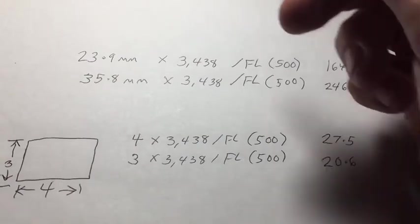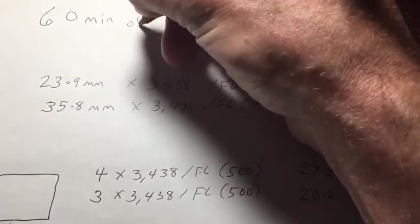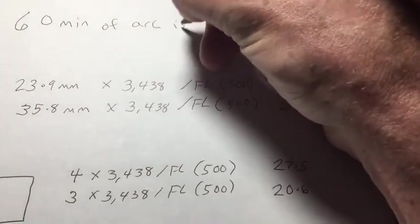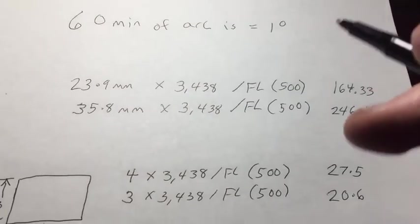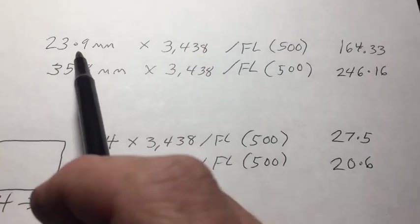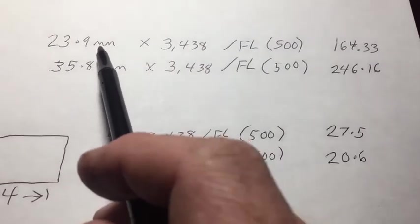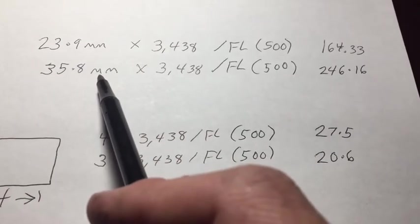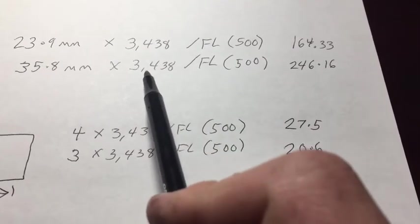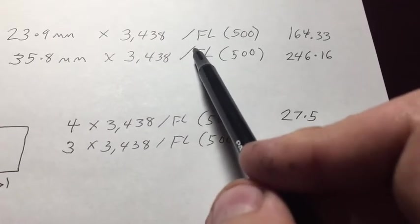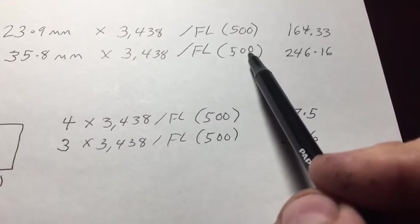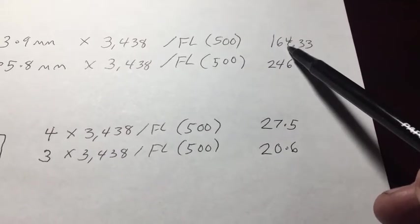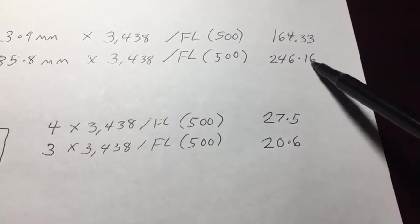This gets a little tricky, but just know that 60 minutes of arc is equal to 1 degree — keep that in mind. Back to the sensor size of the Canon 6D: 23.9 millimeters by 35.8. Multiply each of those numbers by 3,438, then divide the result by the focal length of the instrument you're using — I'm using 500 millimeters as an example again — and I get 164.33 by 246.16 arc minutes.